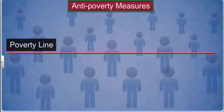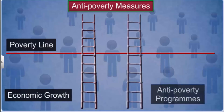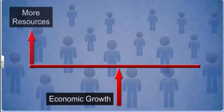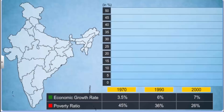Anti-poverty measures taken by the Indian government are based on two main objectives: increasing economic growth in the country and launching anti-poverty programs for specific groups of people. Economic growth provides more resources and opportunities for human resource development like education, training and healthcare, all of which result in reduction of poverty. This graph clearly shows the link between the increase in the growth rate of the economy and the decrease in the poverty ratio in India.